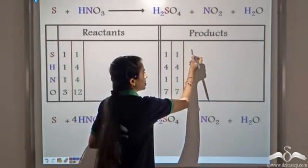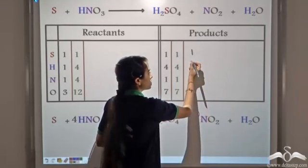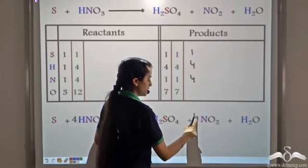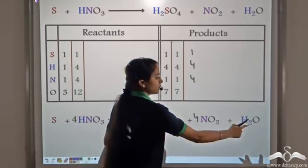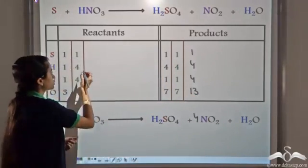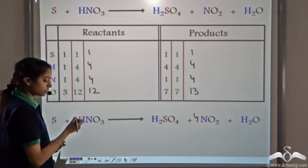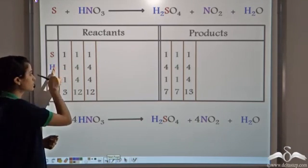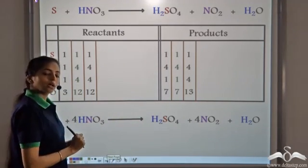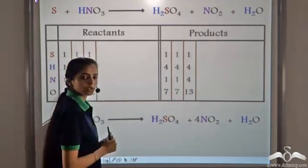Taking 4 molecules of nitrogen dioxide gives us 1 sulfur atom, 4 hydrogen atoms, 4 nitrogen atoms, and 4 atoms of oxygen on the product side. On the reactant side no change. Sulfur, hydrogen, and nitrogen are balanced, but oxygen is not balanced — we have 12 atoms on the reactant side and 13 atoms on the product side.